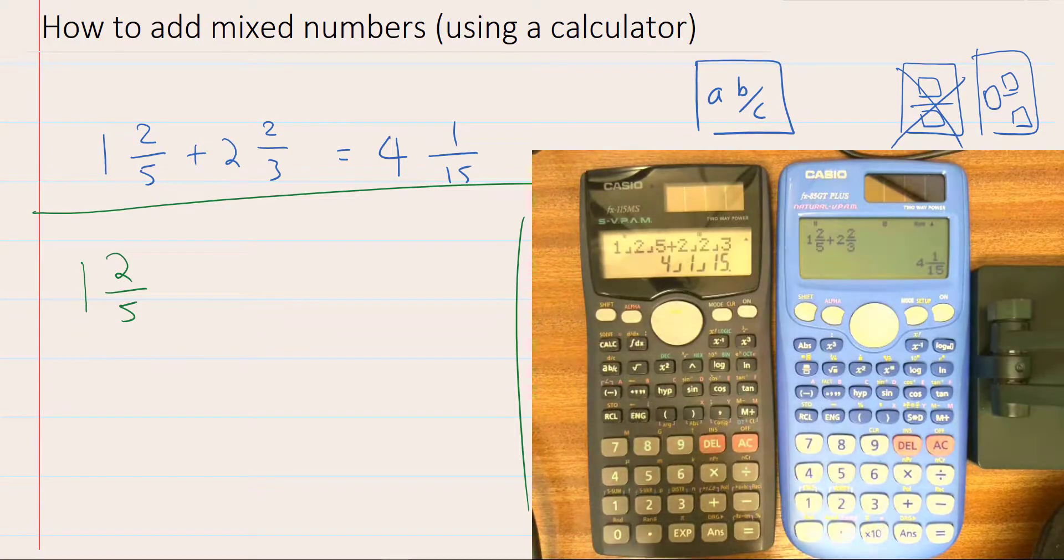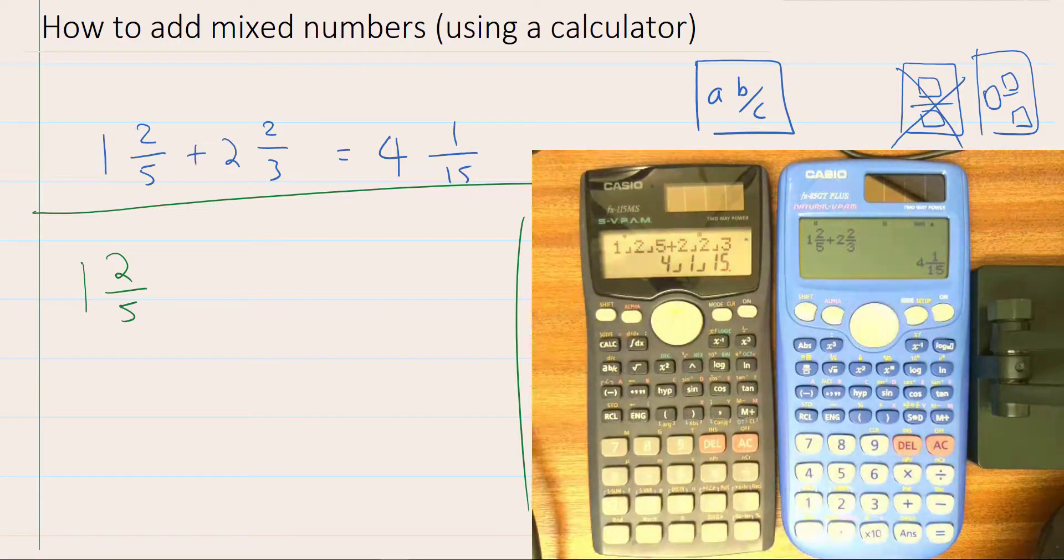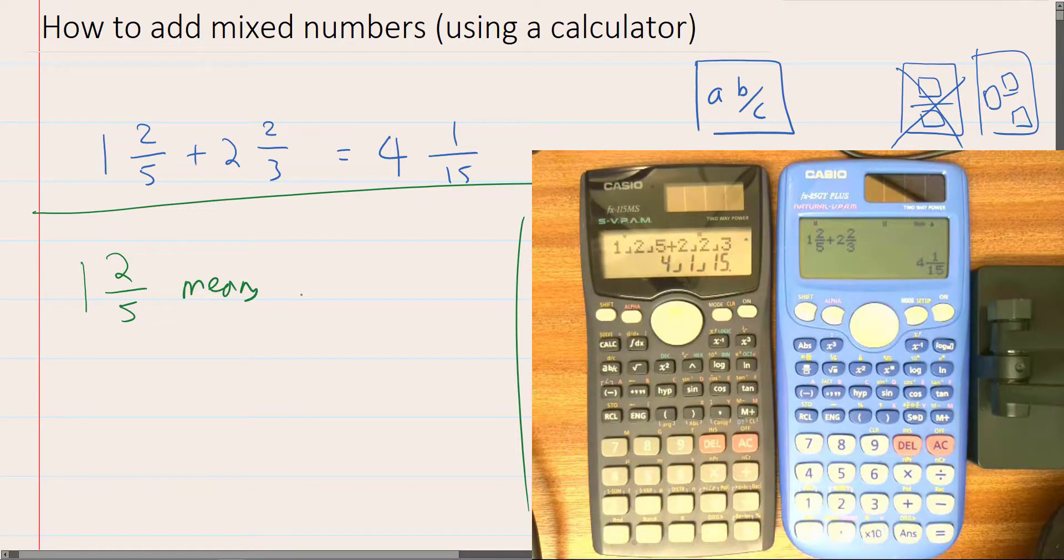Okay, so you're probably wondering how did that sum come out wrong the first time. So 1 and 2 fifths means 1 plus 2 fifths.